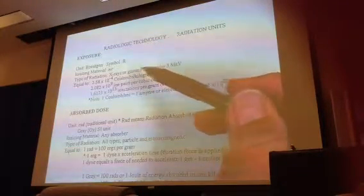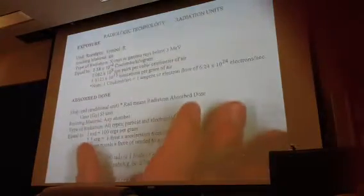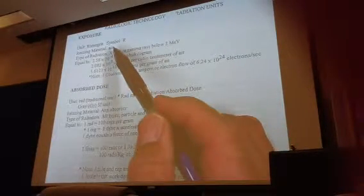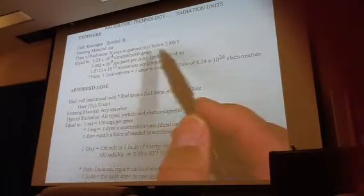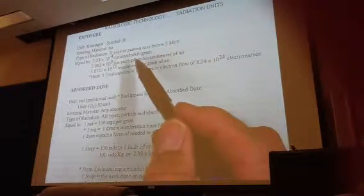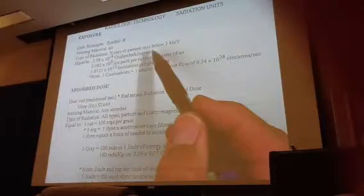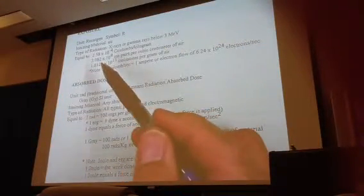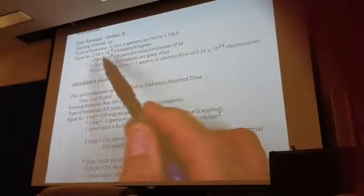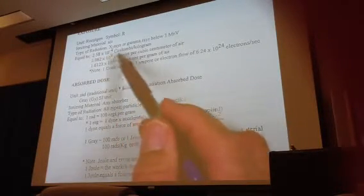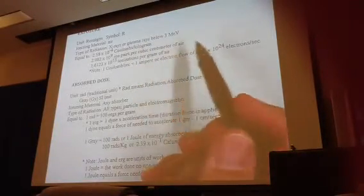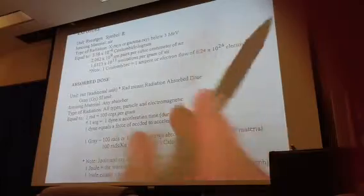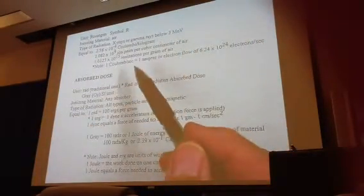We're trying to phase out the Roentgen. But some interesting things about it: the material that we use to detect and measure the Roentgen is air or gas. It only measures x-ray or gamma rays below 3 MeV. You cannot use the Roentgen to detect particle radiations. So alpha and beta particles are not counted with this. The new, or the international unit for the Roentgen, is equal to 2.58 times 10 to the minus 4 coulombs per kilogram of air.